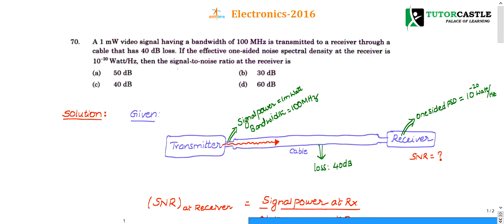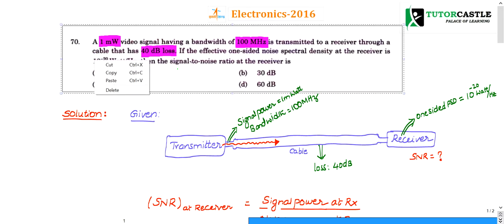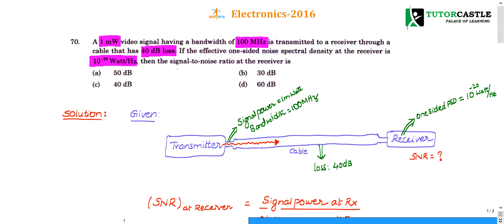Question number 70. A 1 milliwatt video signal having a bandwidth of 100 megahertz is transmitted to a receiver through a cable. The loss in the channel is given as 40 dB. The effective one-sided noise spectral density at the receiver is given as 10 power minus 20 watts per hertz. The question asks: what is the signal-to-noise ratio at the receiver?